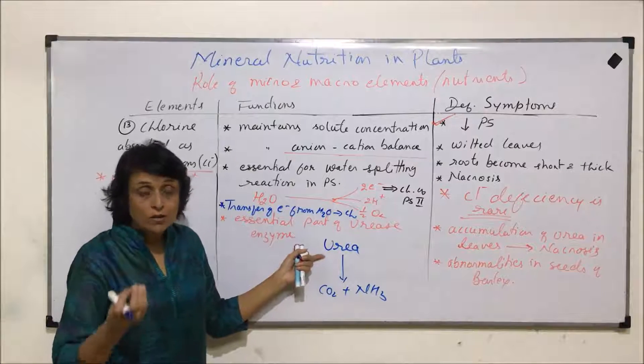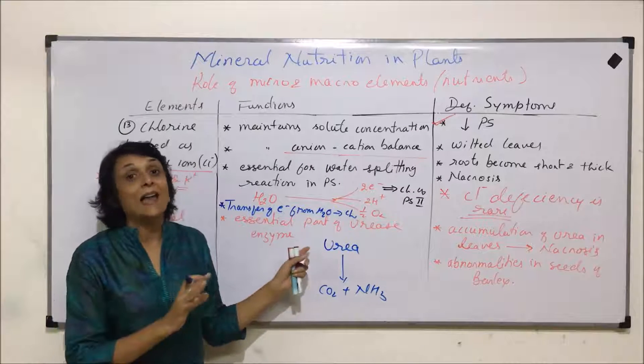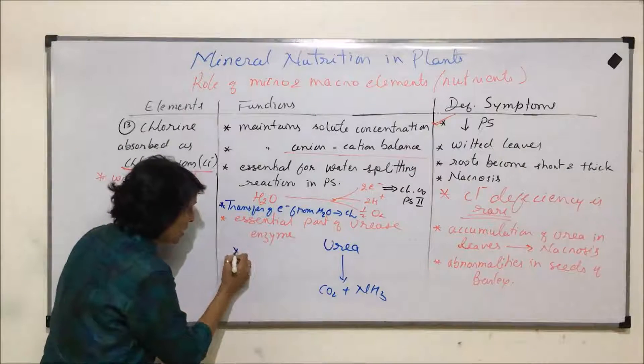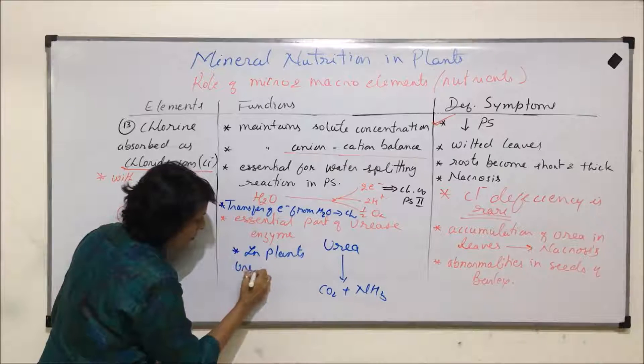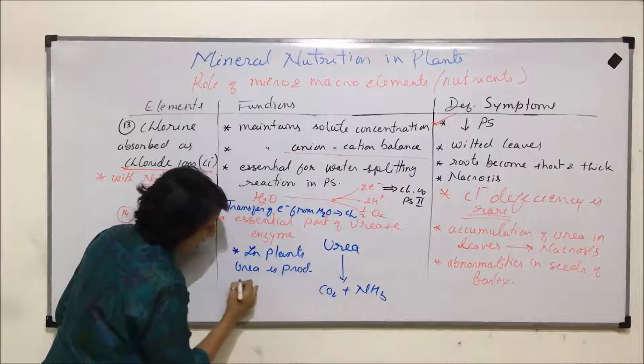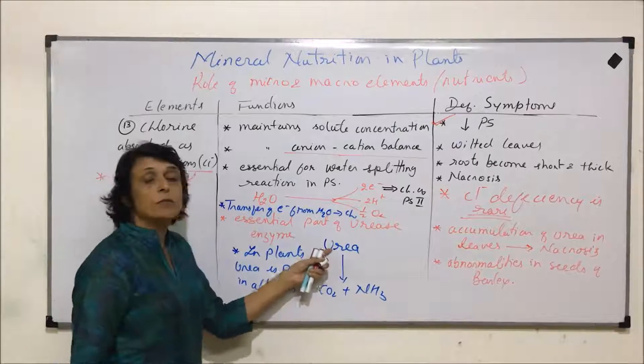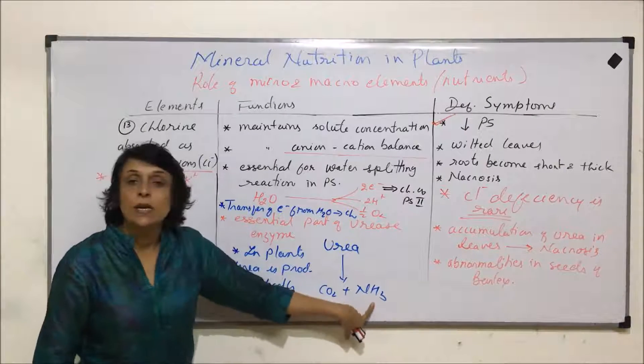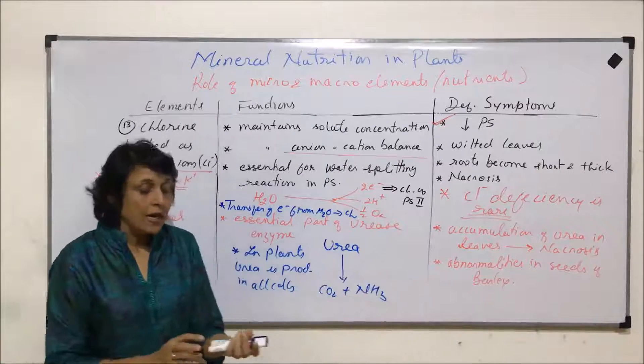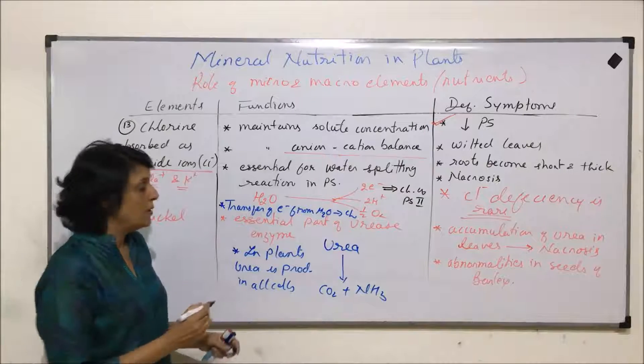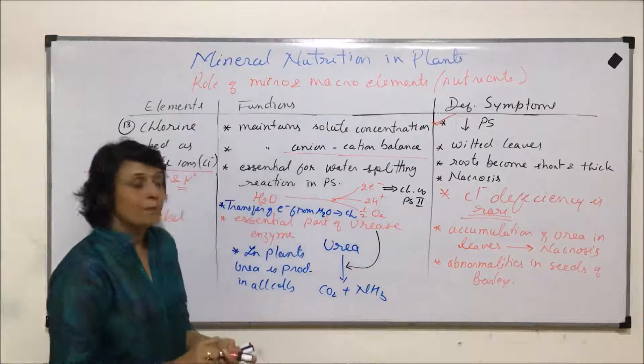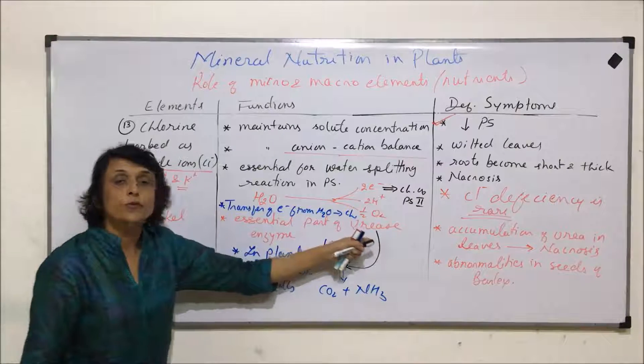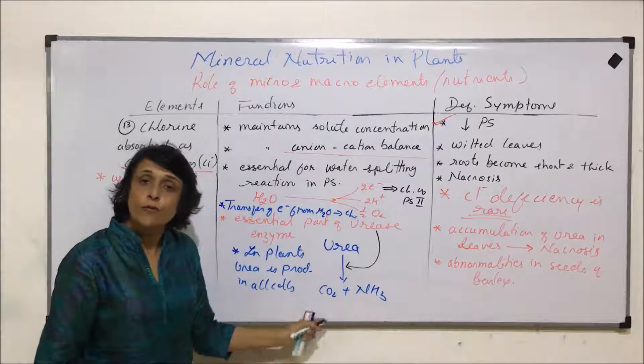Whenever we talk of the term urea, what comes to mind are animals. But in plants also, in almost every cell urea is produced. In plants, urea is produced in all cells. Because we know urea is toxic, it has to be broken down into non-toxic substances. Carbon dioxide and ammonia are produced, and ammonia is getting converted again into some other non-toxic nitrogenous compound. This reaction is helped by urease enzyme. If nickel is present, it is a part of urease and this urease enzyme helps in breakdown of urea.